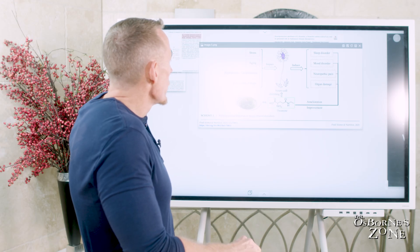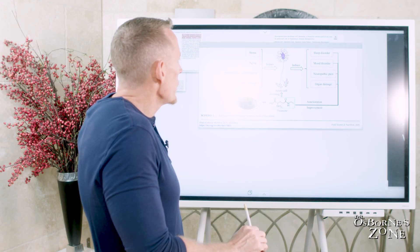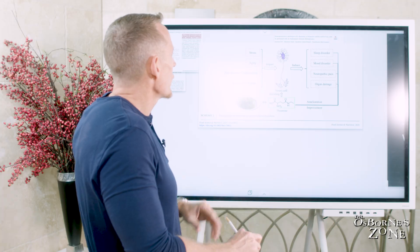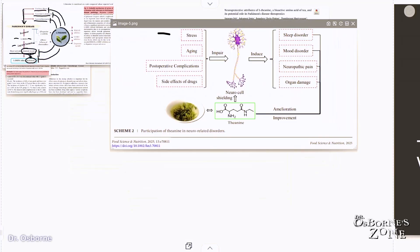Here's another visual for you and the way that theanine impacts nerves. You've got different things that can impact or damage nerves - stress and aging and post-operative complications and side effects of medications as we just talked about. When you impair that nerve, depending on the nerve and where it's located, you can get sleep dysfunction, mood problems, neuropathic pain, and even organ damage. What they're finding in animal and cell research is that theanine helps to attenuate these things as it relates to neurological problems.